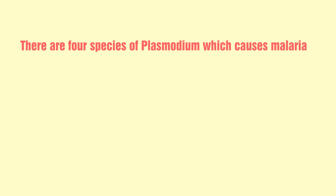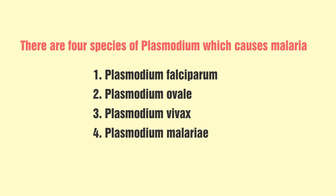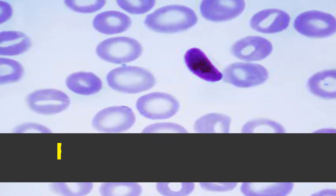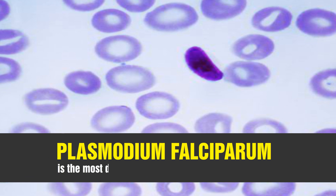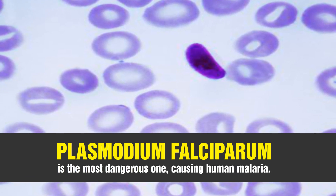There are four species of Plasmodium which cause malaria: one, Plasmodium falciparum; two, Plasmodium ovale; three, Plasmodium vivax; and four, Plasmodium malariae. Out of these four, Plasmodium falciparum is the most dangerous one causing human malaria.